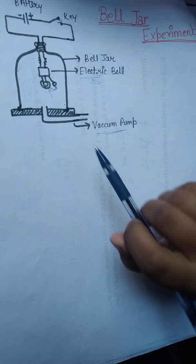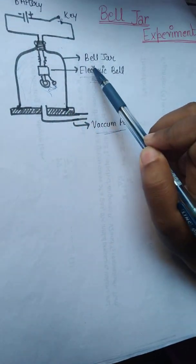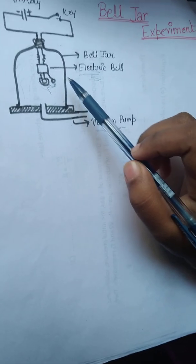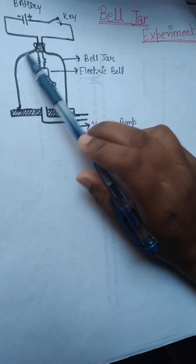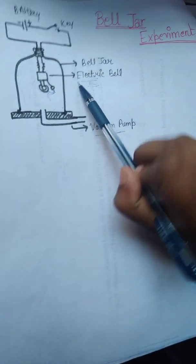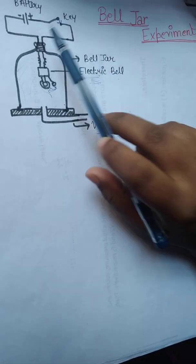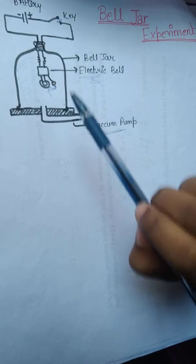Let's start the procedure. Take an electric bell and suspend it with the airtight bell jar, and then connect the bell jar with a vacuum pump. The electric bell should be connected with the battery.